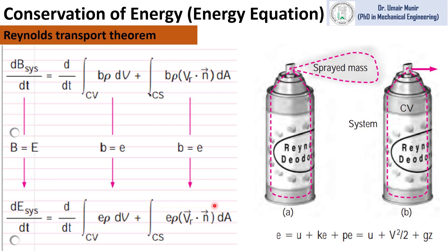In this video we will derive the conservation of energy equation using Reynolds Transport Theorem. The Reynolds Transport Theorem has been explained in a previous video — the link is provided in the description. It provides a relationship between the change in the properties of a system and the change in the property of a control volume, serving as a link between a system and a control volume.